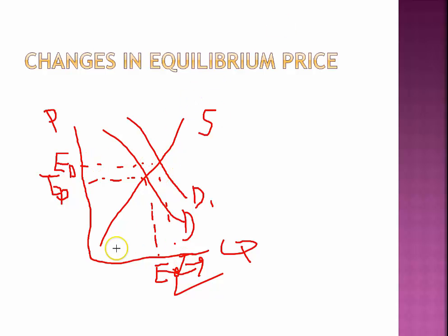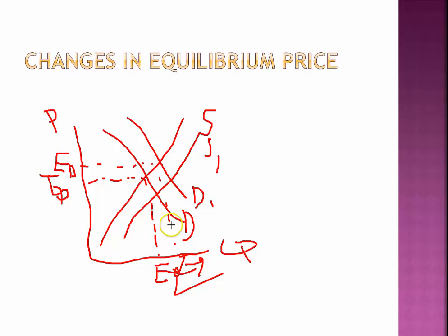Now let's say supply also shifts to the right. You know the new quantity is somewhere higher, but you don't know exactly where the new price lands — it could be the same as before, way higher, or way lower. However, you do know the equilibrium quantity is definitely higher, because no matter how you shift both demand and supply to the right, the new quantity will be higher than the old one. There's always a question on the AP exam asking how price and quantity are affected when demand or supply or both increase — make sure you always look for the option 'indeterminate,' because if you're not sure how much the price changes, it's probably indeterminate.